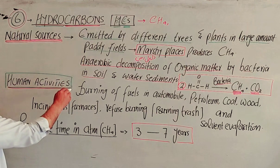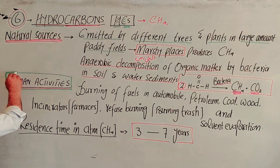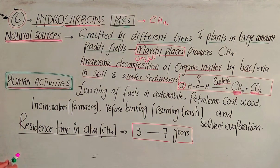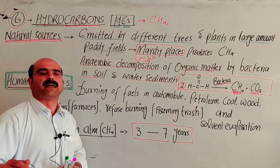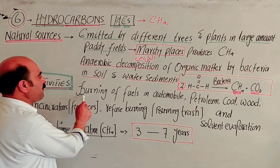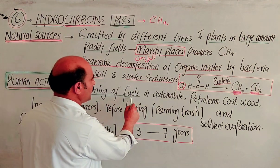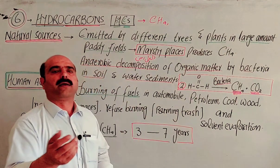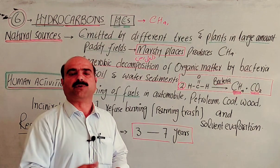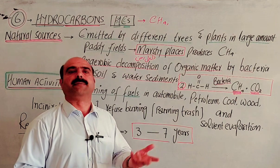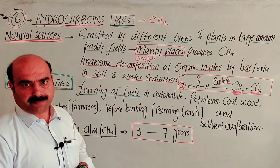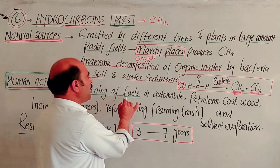Now, man-made or anthropogenic activities also produce hydrocarbons and release them as pollutants. The first anthropogenic source is the burning of fuels. When fuels are burned, hydrocarbons are released into the atmosphere.